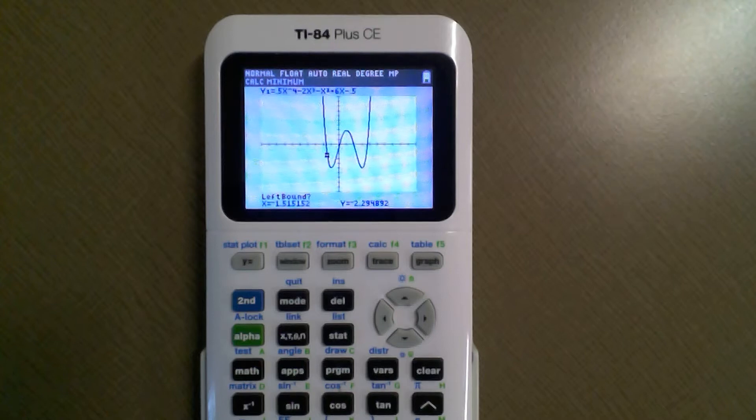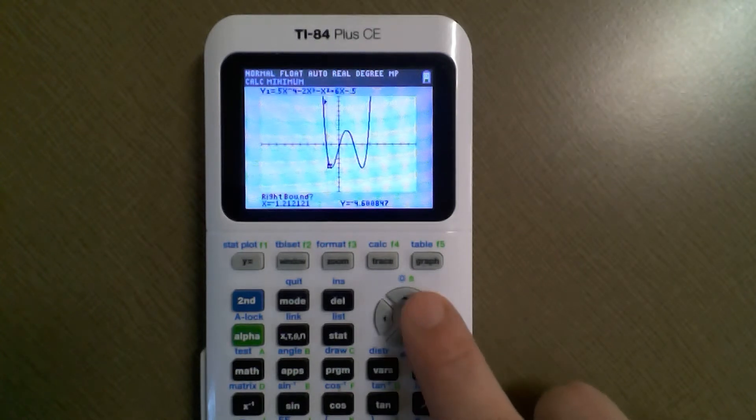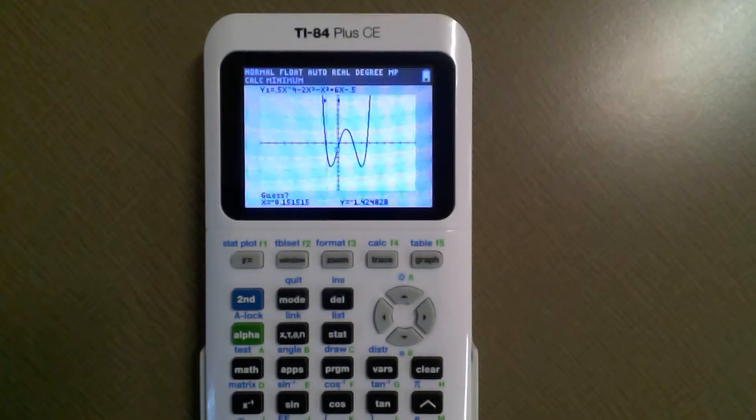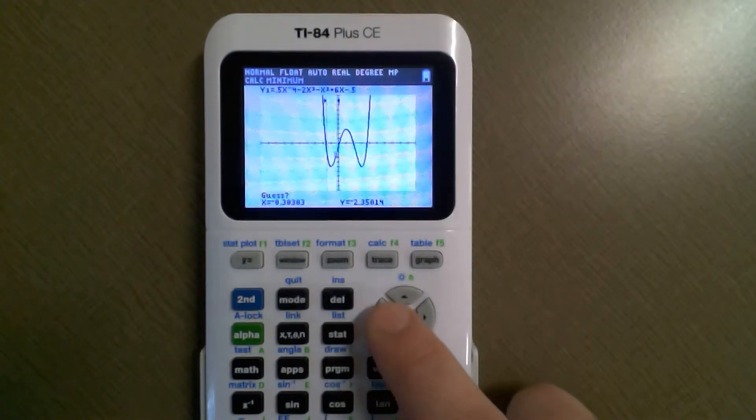Then I'm going over to the right when it says right bound and hit enter. When it says guess, I want to get fairly close to that minimum. What we're doing is the calculator is saying tell me between what two x values this minimum occurs and I'll run an algorithm and figure out where that minimum is.